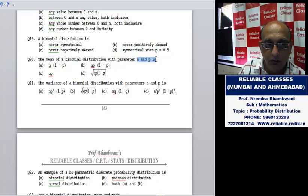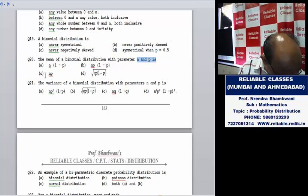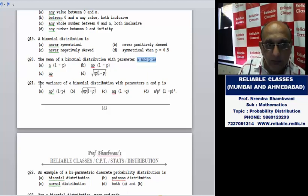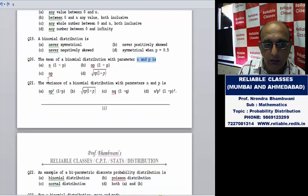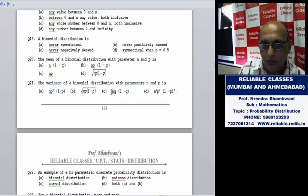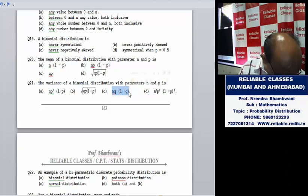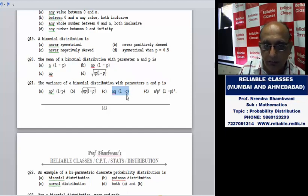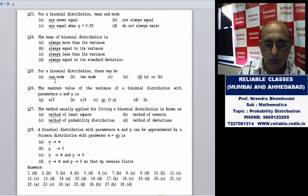The mean of a binomial distribution is np. This should be variance, not mean - it's printed wrong. Variance of a binomial distribution is npq. So the answer is c. Understand: n, q, and p is 1 minus q. And mean is np. Follow this?